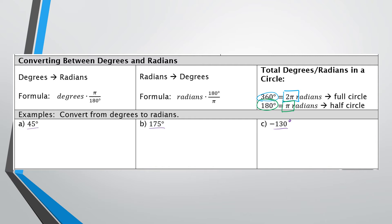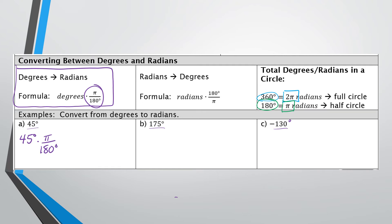To go from degrees to radians, there's a formula: take the degree measurement you were given — in our problem, 45 — and multiply by pi over 180. Anytime you start with degrees, you multiply by π/180, and that gives you your measurement in radians. You'll notice degree cancels degree, leaving just the radian measurement.